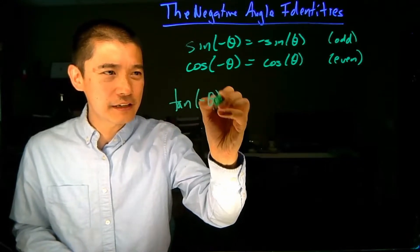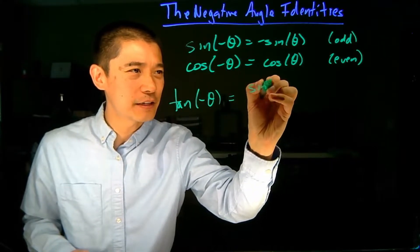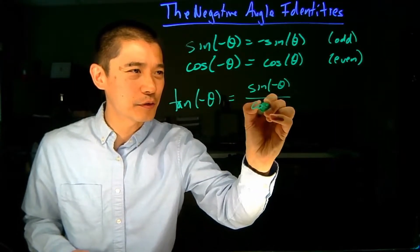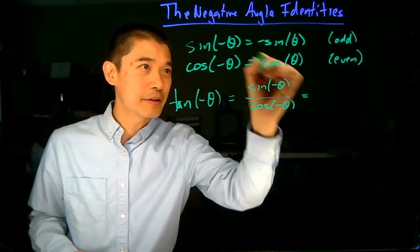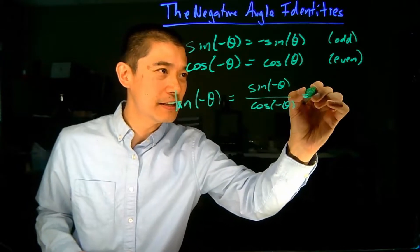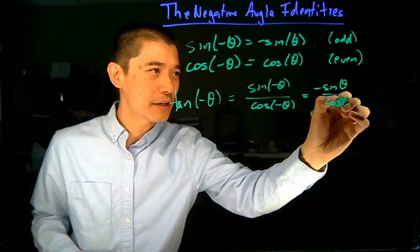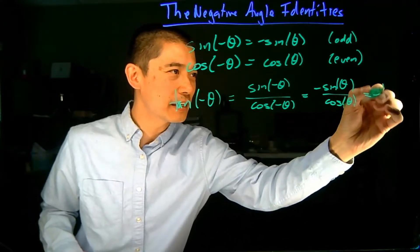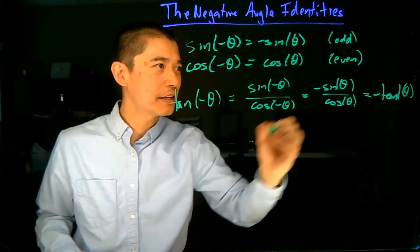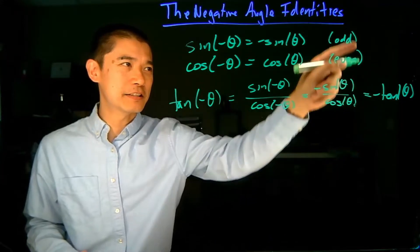Tangent of negative theta. Well, all we need to do is just make the substitutions. We know that tangent is sine of negative theta over cosine of negative theta. Then we use the relationship here. The sine of negative theta is negative sine theta. Cosine of negative theta is cosine of theta. And you can see that the negative sine comes out, and you're just left with negative tangent of theta. And so, the tangent function satisfies this property, and it is an odd function.